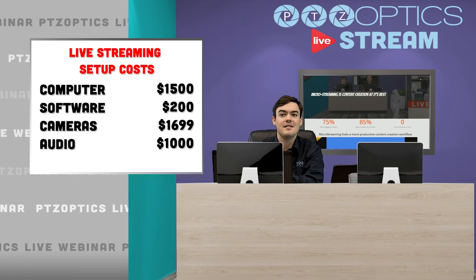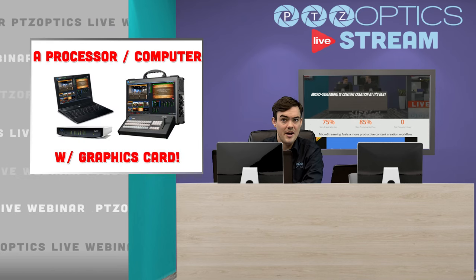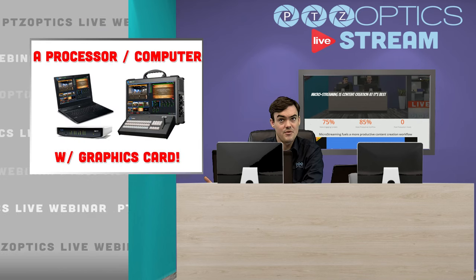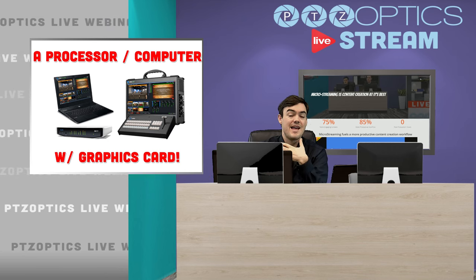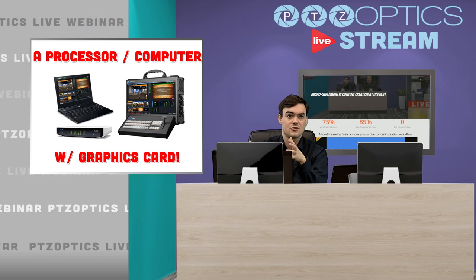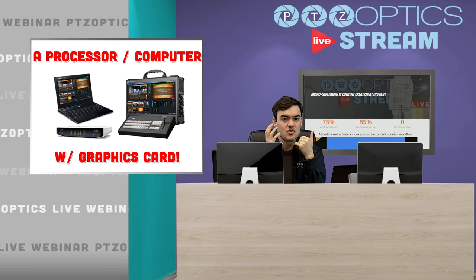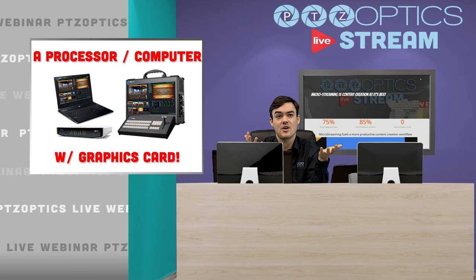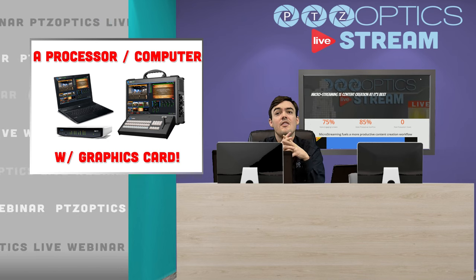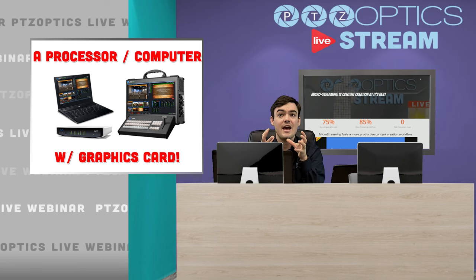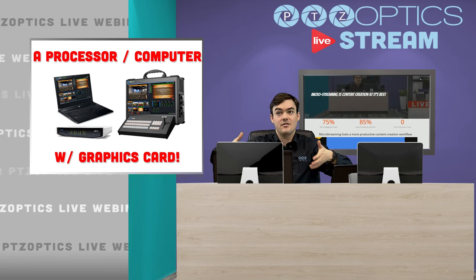When you're looking at a processor or a computer — a processor being like a vMix Go, that's a $9,000 touchscreen all-in-one inclusive system. There's the TriCaster Mini, which is like a $10,000 piece of equipment that does it all. Or you can actually use a laptop to do all of this, which is what I'm using right now.